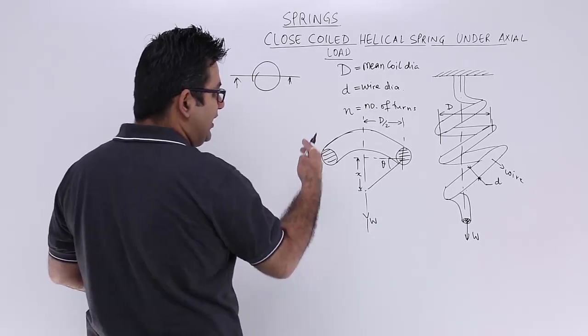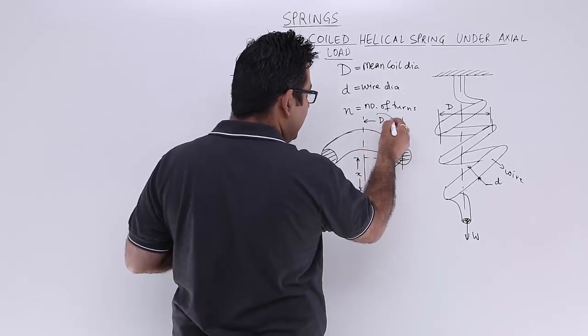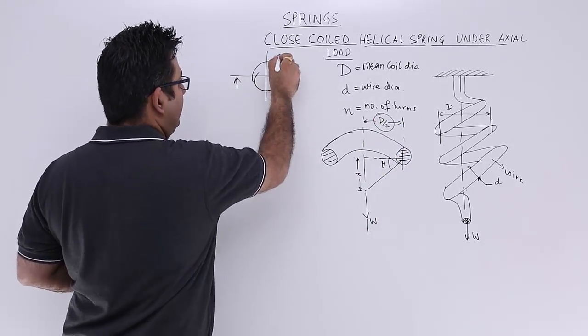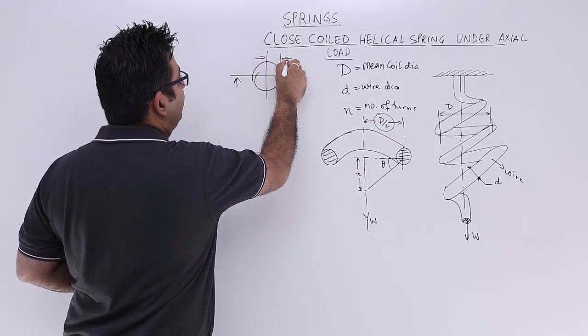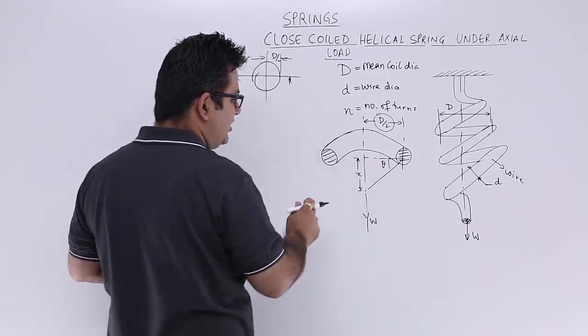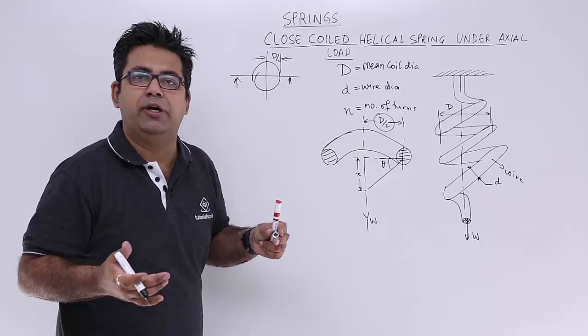So from this, I can say, now this is the half of the coil diameter. You can see this. This would be the half of the coil diameter. Right.